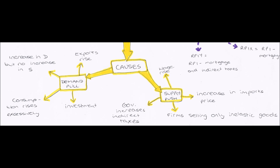Also, if imports fall or exports rise, then the number we get from the bracket part of the formula will increase. And if that increases, then there will be an increase in aggregate demand, the curve will shift right, price will increase from P1 to P2, and so therefore inflation has occurred.